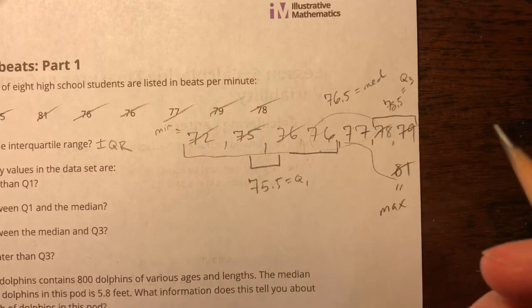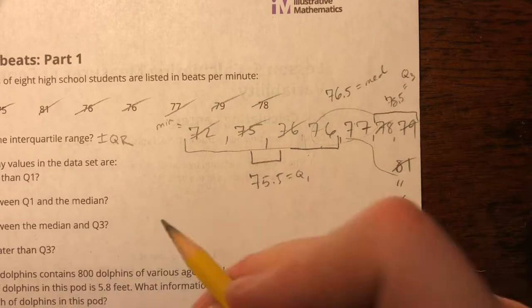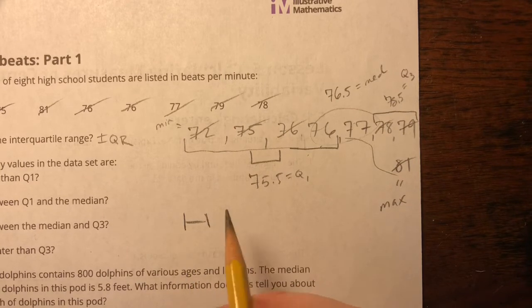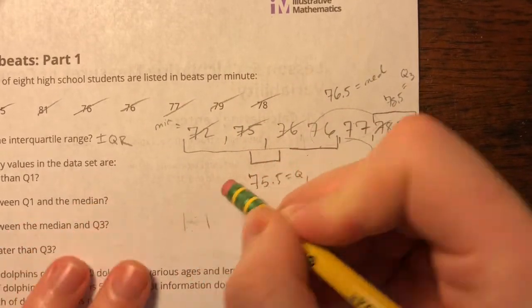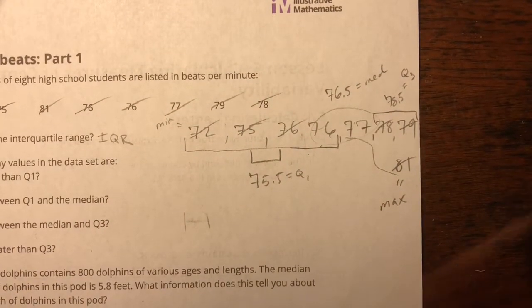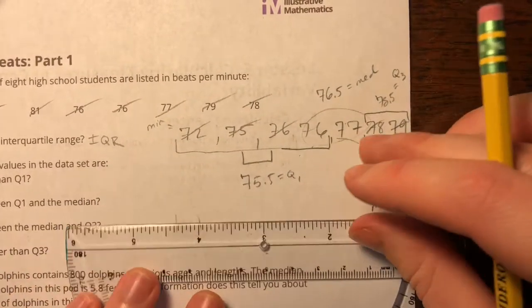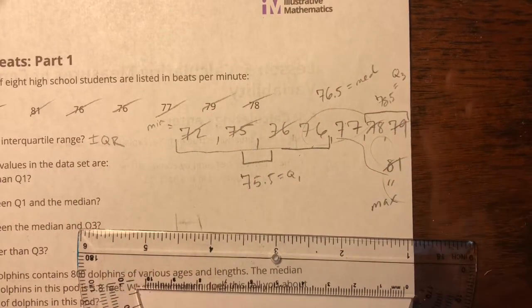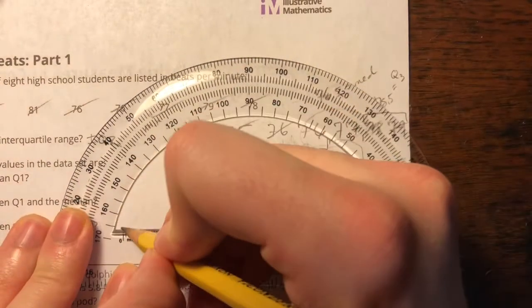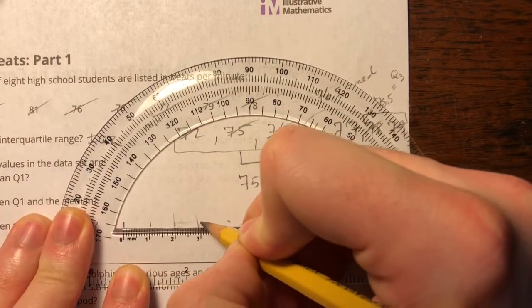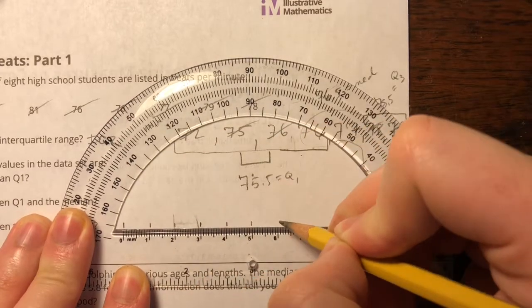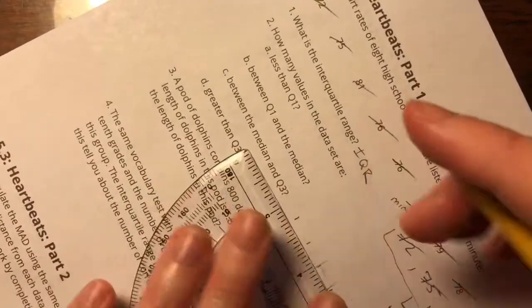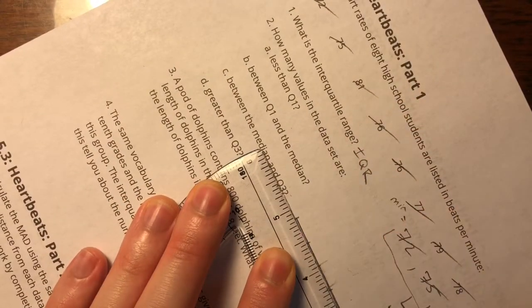So now I have the five values. I can make my box plot. They didn't say that I had to make this, but I think it's helpful to sort of understand the data if you look at it that way. So I've got from 72 to 81, that's nine points. Let's just do nine centimeters across.